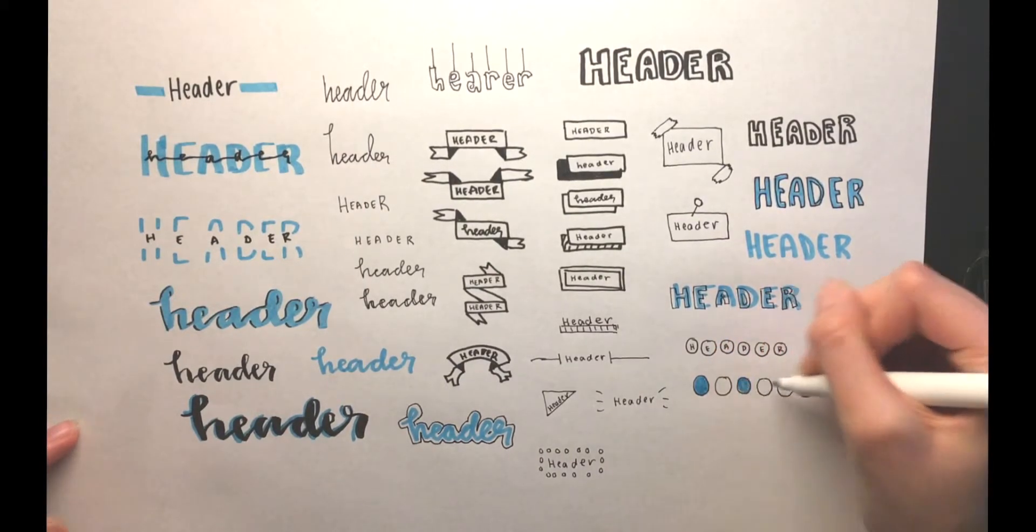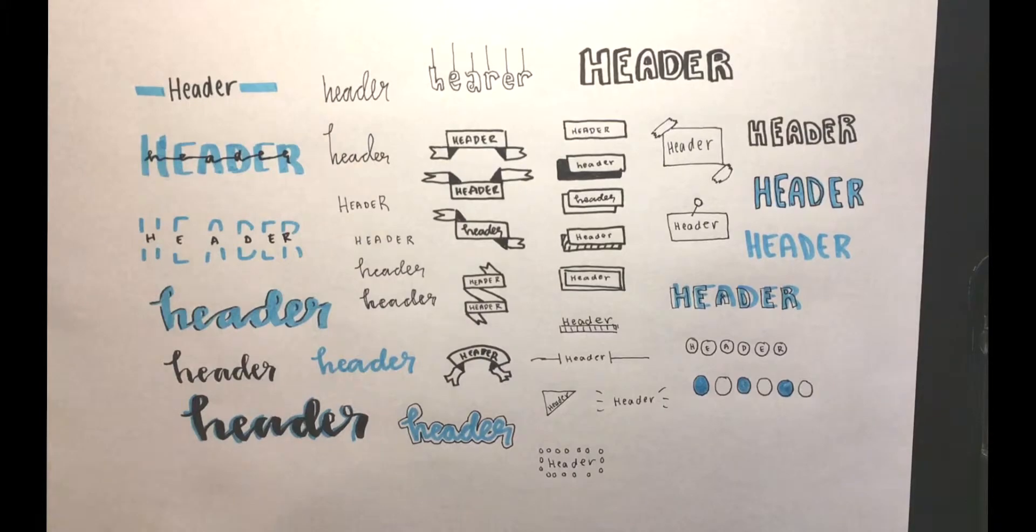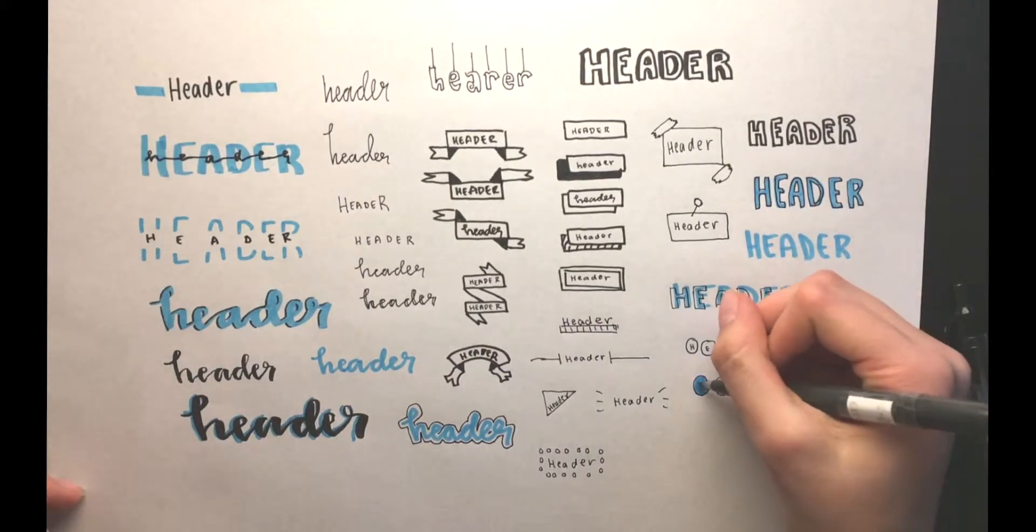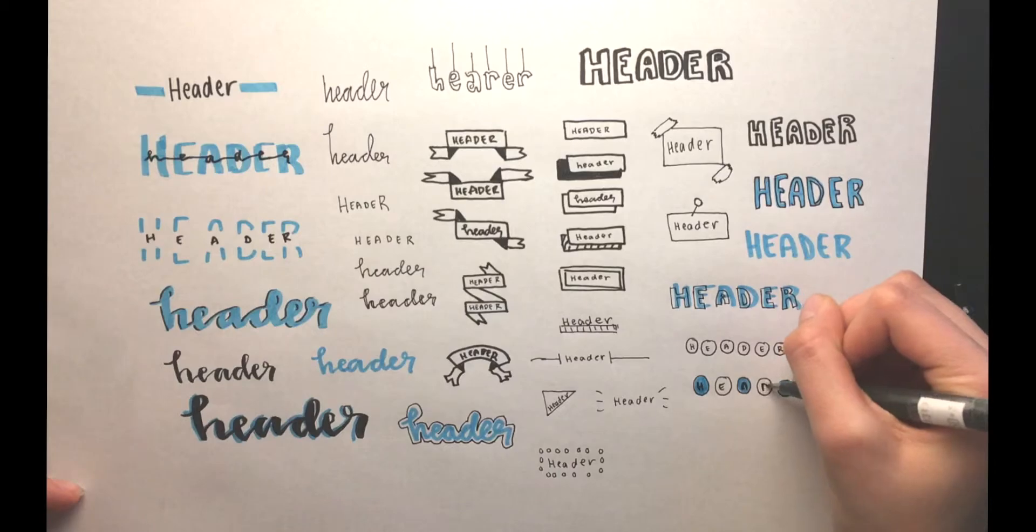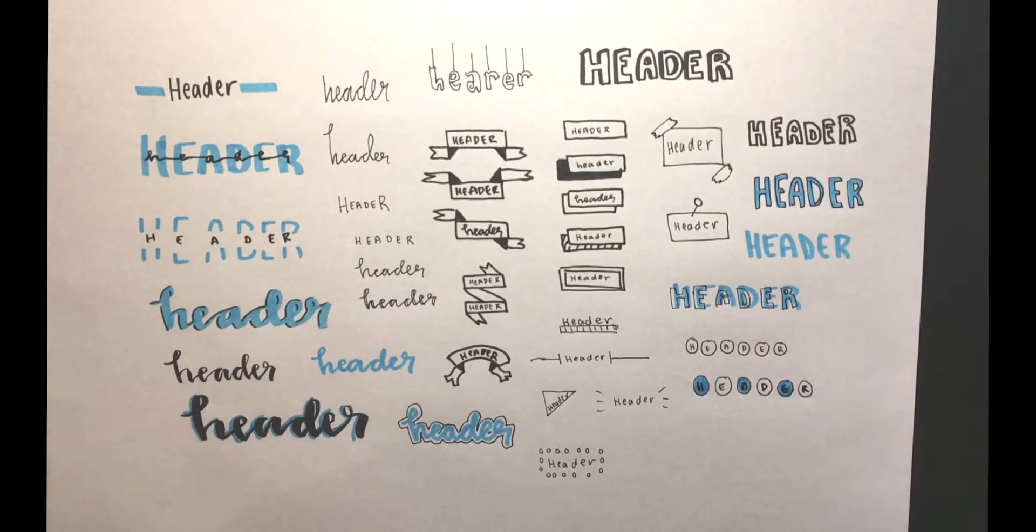And this next one is basically the same thing. I just colored in every other circle. Just trying out something. Color them all in. Use different colors. Whatever you choose.